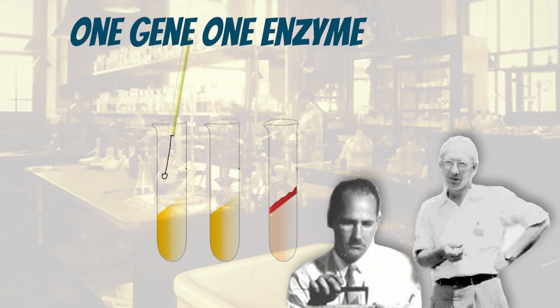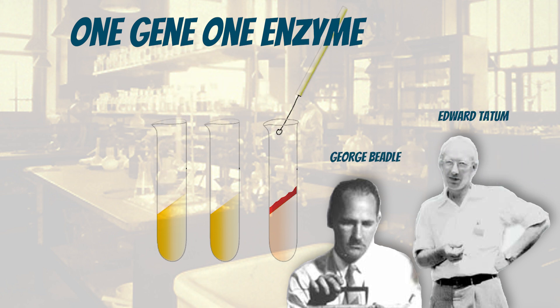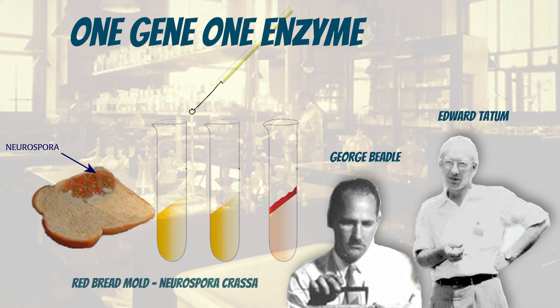In 1941, George Beadle and Edward Tatum, through experiments on the red bread mold Neurospora crassa, showed that each gene encodes one enzyme which acts by regulating distinct chemical events.